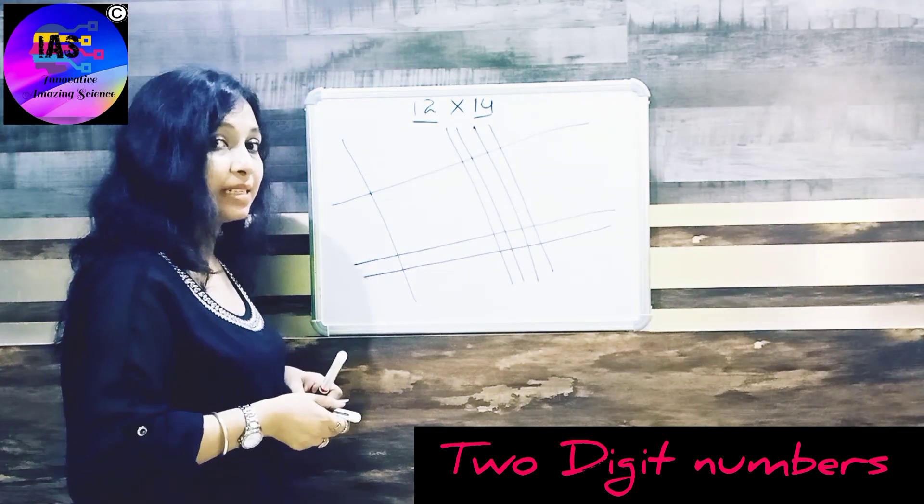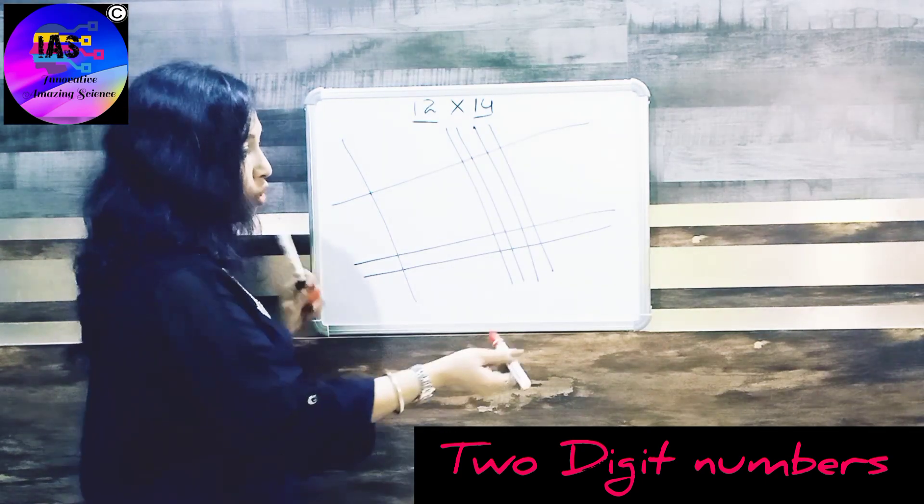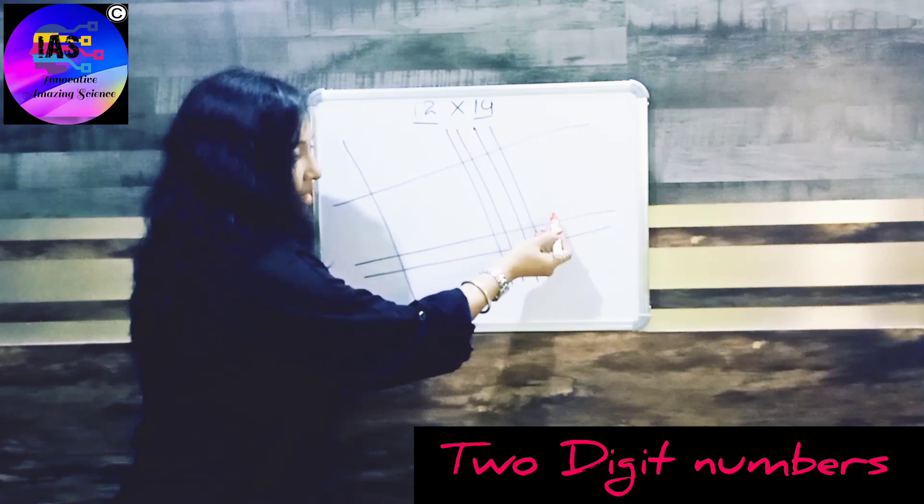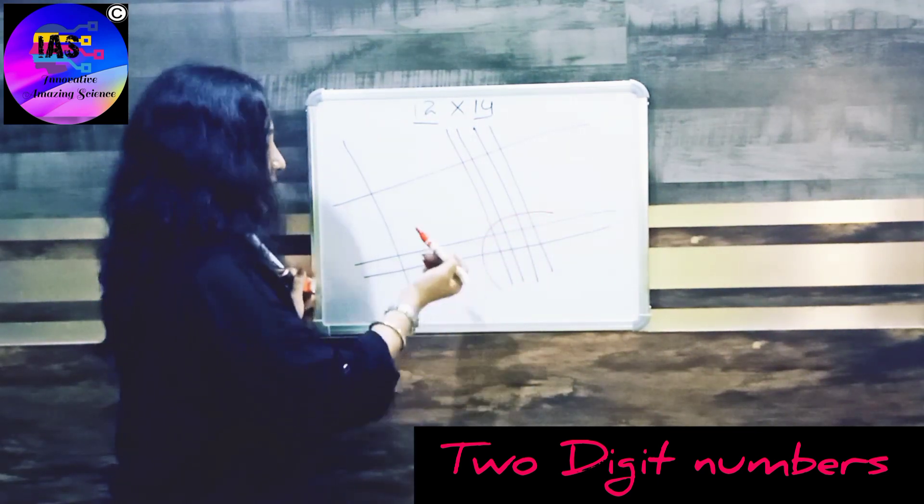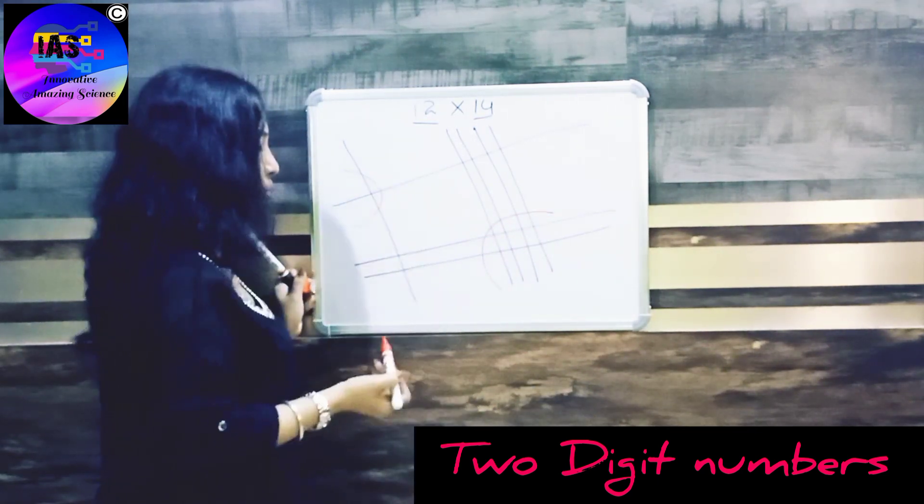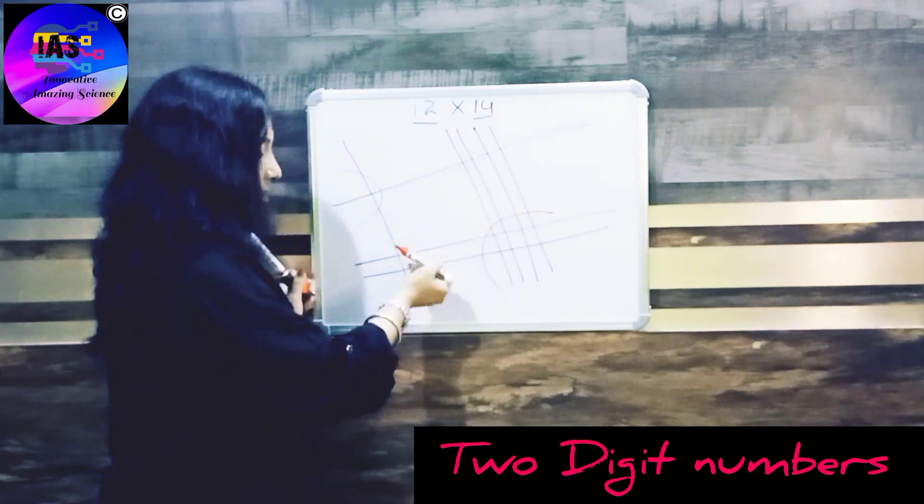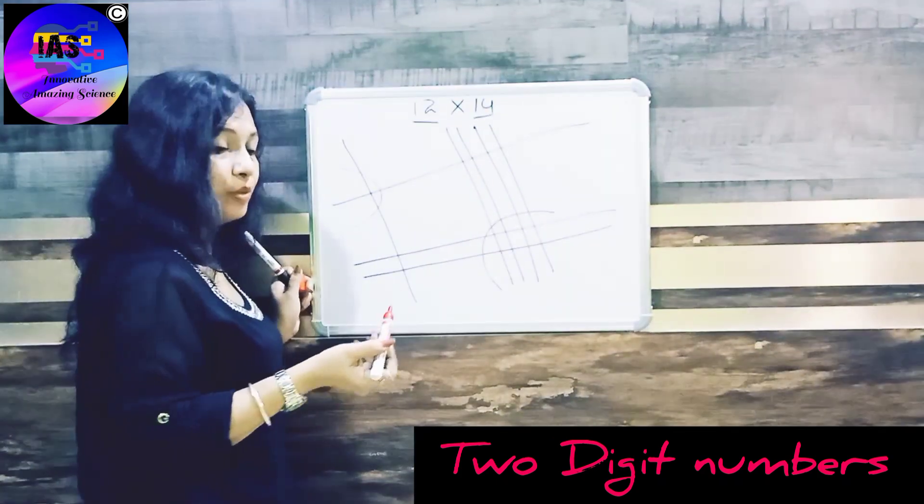Next, see where the lines intersect each other. So if you concentrate here, you can see the lines are intersecting at this point. Next, the line intersects at this point, and here at this points. So we'll start counting the points of intersection.